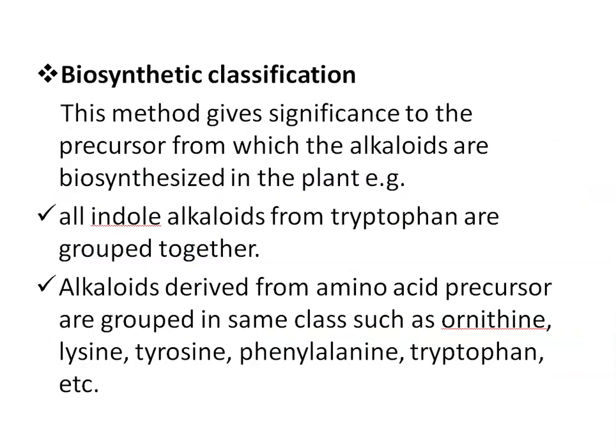Then biosynthetic classification. This method gives significance to the precursor or starting compound from which the alkaloids are biosynthesized in the plants. For example, all indole alkaloids from tryptophan are grouped together. All alkaloids derived from amino acid precursors are grouped in the same class, such as ornithine-derived alkaloids, then lysine, tyrosine, phenylalanine, or tryptophan-derived alkaloids, etc.